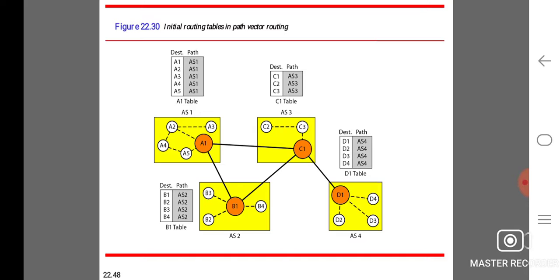Initial routing tables in path vector routing. Destinations A1, path is A1. For A1 to A5, the common path AS1 is used. In B1 table, for B1, B2, B3, B4, we are using the path AS2. For C1, C2, C3, we are using the path AS3. For D1, D2, D3, D4, we are using the path AS4.